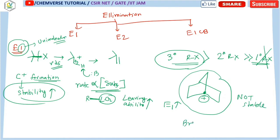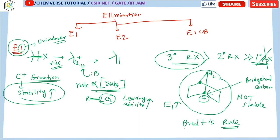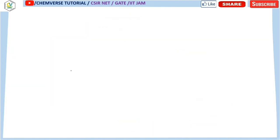This relates to Bredt's rule. Bredt's rule states that in a bridgehead position — this is the bridgehead position in a bridged molecule — the two carbons present at the ring junction are called bridgehead carbons. Bridgehead carbons do not allow any carbocation or double bond. So this carbocation is not stable, and if the adjacent hydrogen were removed to produce a double bond at the bridgehead, that compound would also not be stable. Due to Bredt's rule, in spite of being a tertiary alkyl halide, it will not give the E1 reaction.